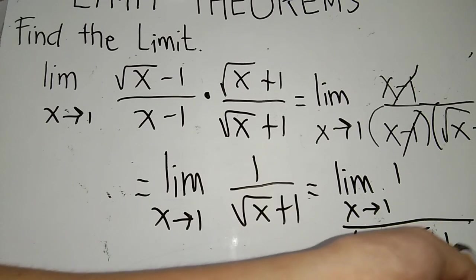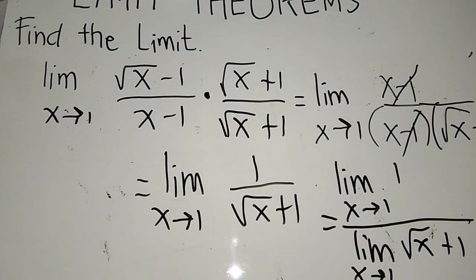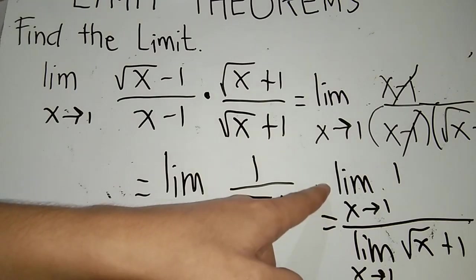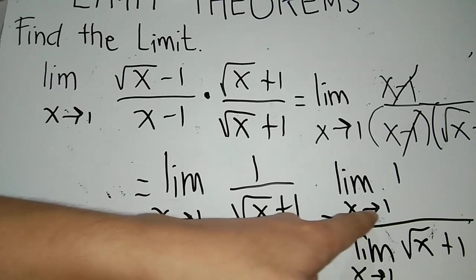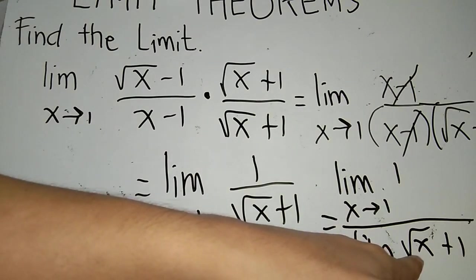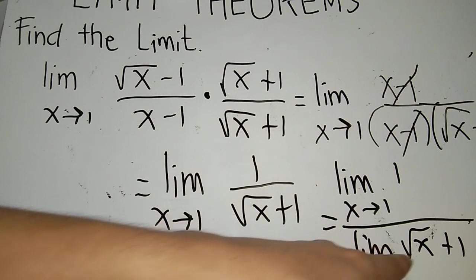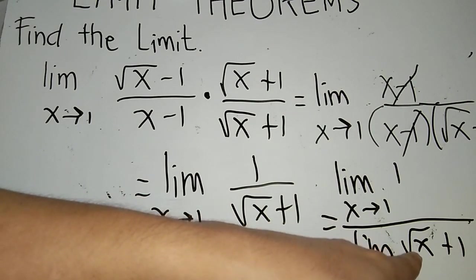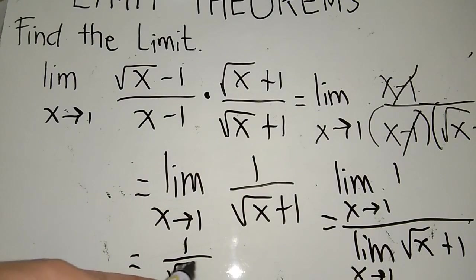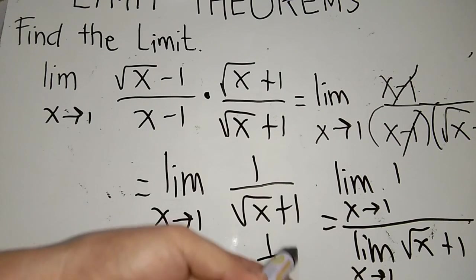So this becomes the limit of 1 as x approaches 1, all over the limit of square root of x plus 1 as x approaches 1. The limit of the constant 1 is just 1. For the denominator, substituting x with 1 gives square root of 1 plus 1, which equals 1 plus 1 equals 2. So the final answer is 1 over 2, or one-half.